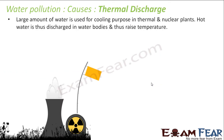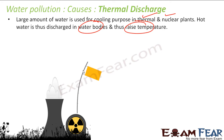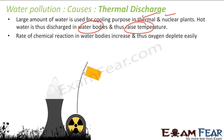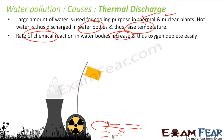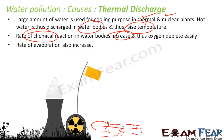The next cause is thermal discharge. Water is used as a coolant agent in thermal power plants and nuclear power plants — cold water is taken in and hot water is discharged back into water bodies. This increases the temperature of the water body, which increases the rate of chemical reactions, causes oxygen to deplete more easily, and increases the rate of evaporation.